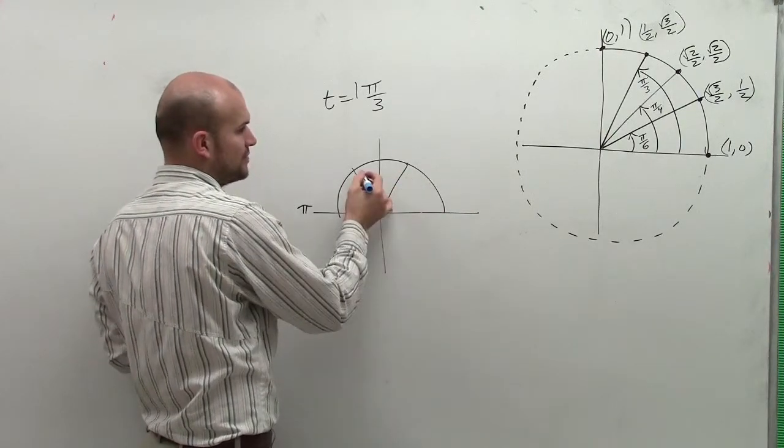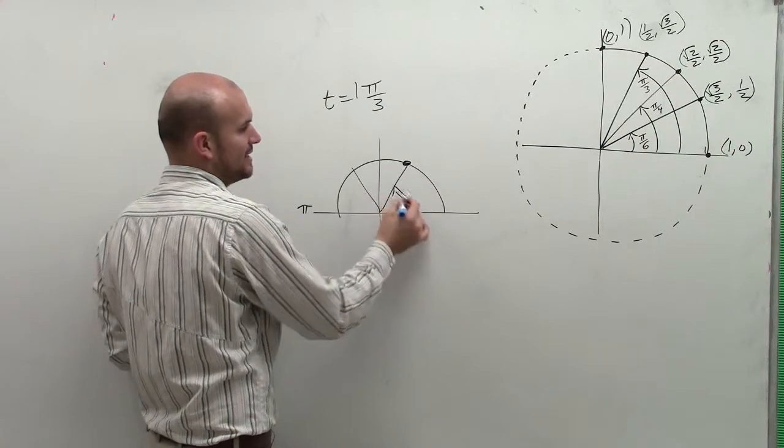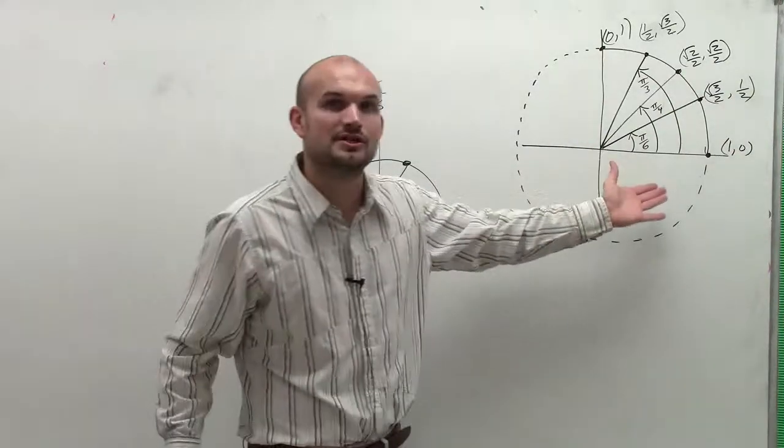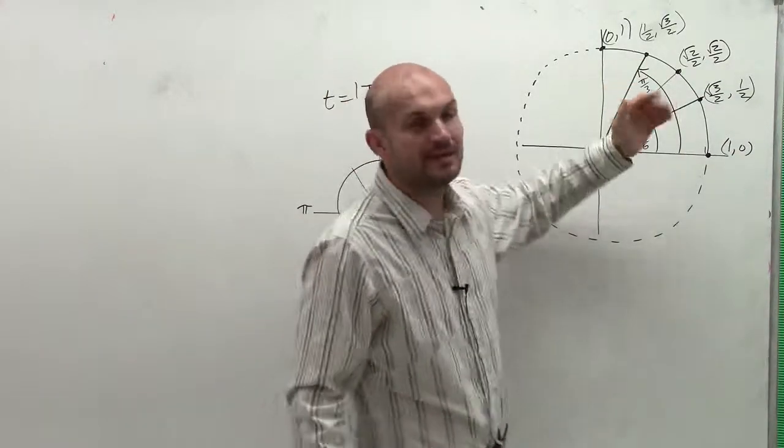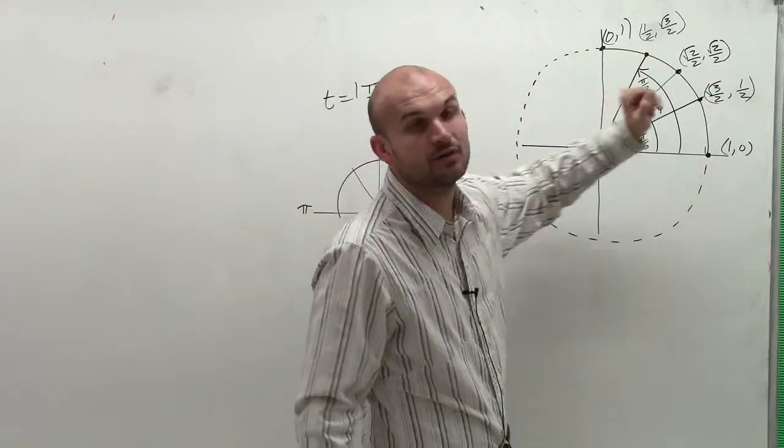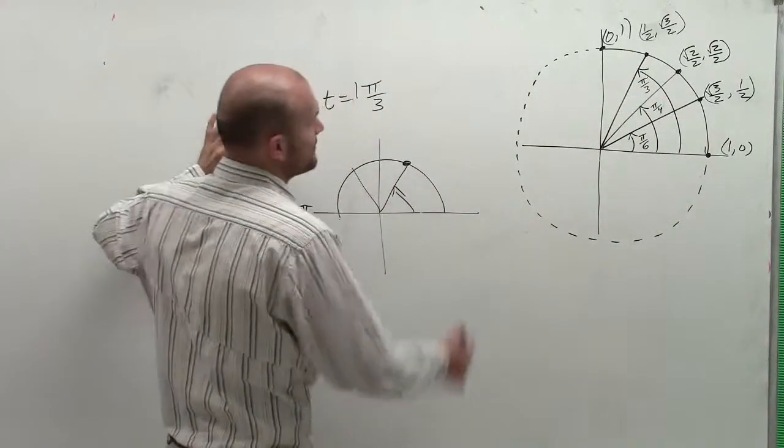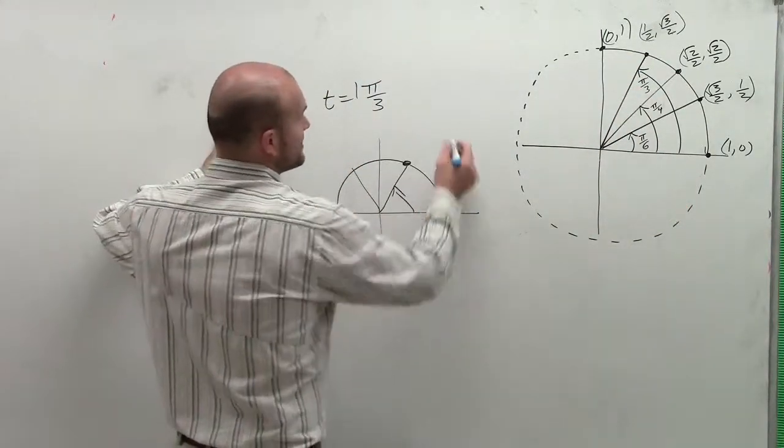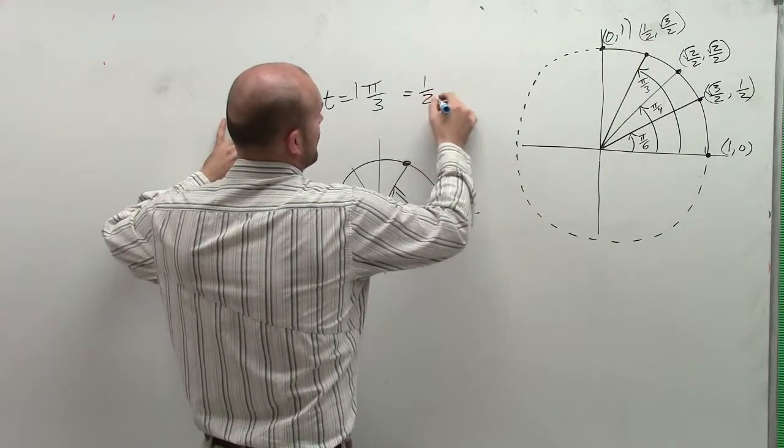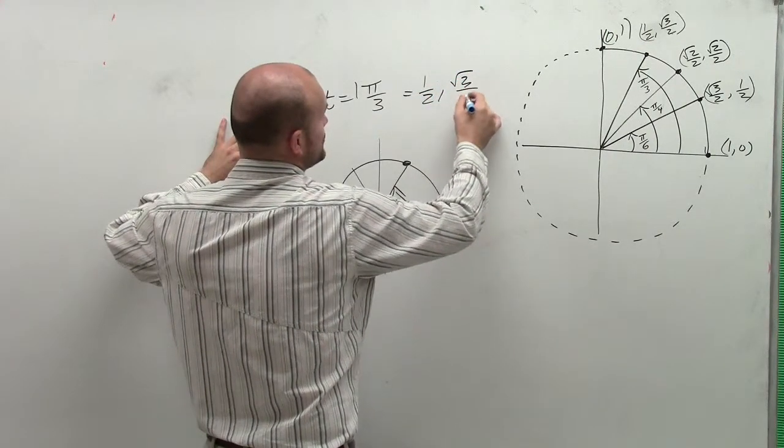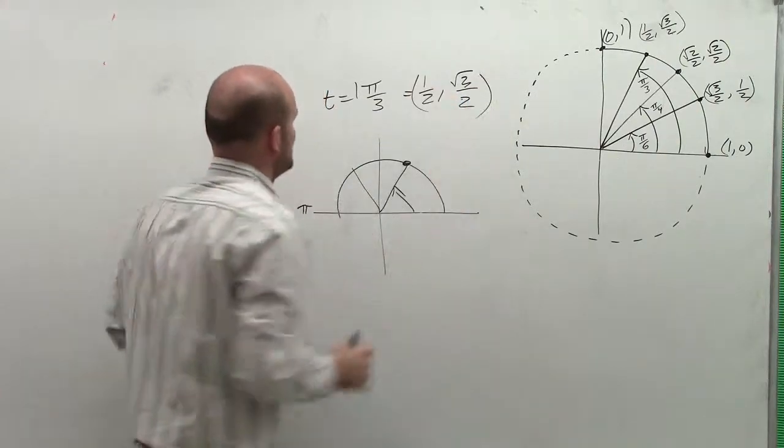We go back to our unit circle to see what is the coordinate value at t equals π over 3. The coordinate value is going to be x equal to 1/2, and y equal to √3 divided by 2.